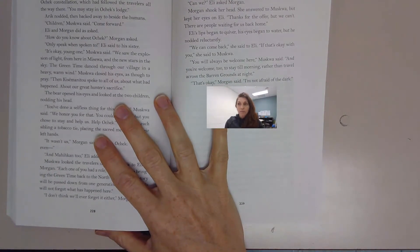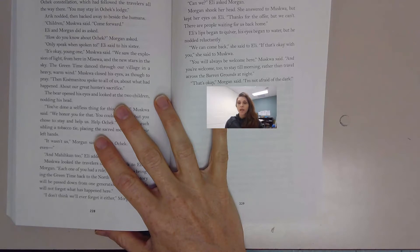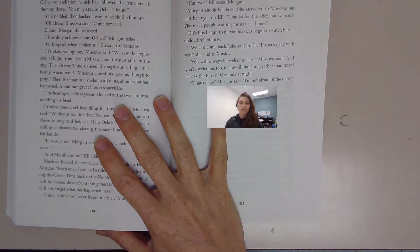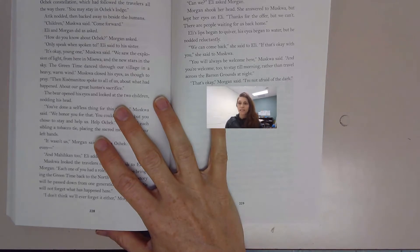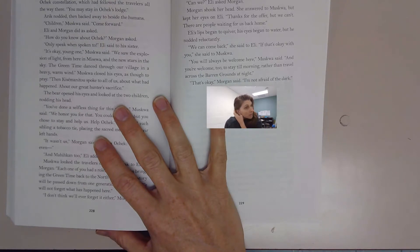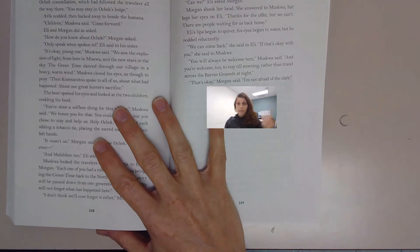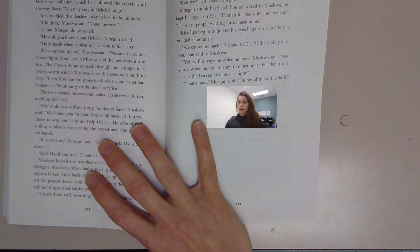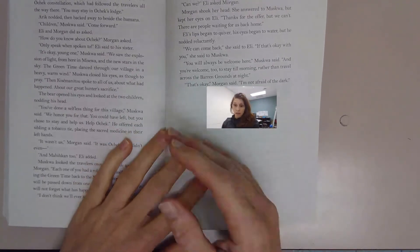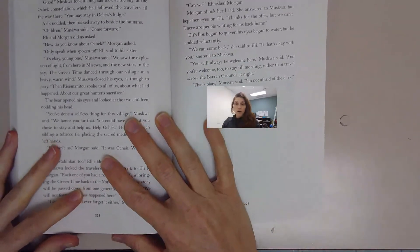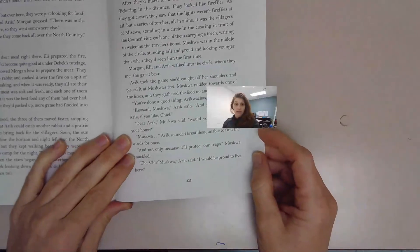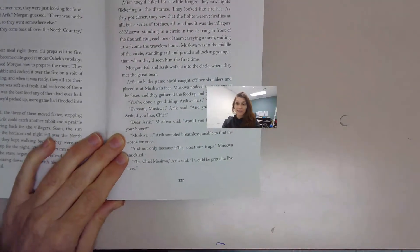They have made their way back to Mizwa, and all the beings of Mizwa were waiting for them to return, holding torches to light their way back. When they did arrive back in Mizwa, Moskwa, the great bear, was there. And Moskwa actually has now asked Eric if she would like to be part of Mizwa, of the village of Mizwa. And Eric is very happy to be part of Mizwa and to live there.